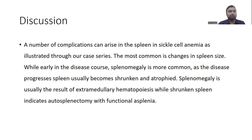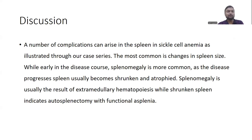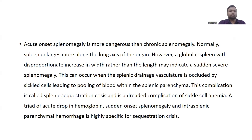Coming to the discussion, a number of complications can arise in the spleen in sickle cell anemia, as illustrated through our case series. The most common is changes in spleen size. While early in the disease course, splenomegaly is more common; as the disease progresses, the spleen usually becomes shrunken and atrophied. Splenomegaly is usually the result of extramedullary hematopoiesis, while a shrunken spleen indicates autosplenectomy with functional asplenia. Acute onset splenomegaly is more dangerous than chronic splenomegaly. Normally the spleen enlarges along its long axis; however, a globular spleen with disproportionate increase in width rather than length may indicate sudden severe splenomegaly.